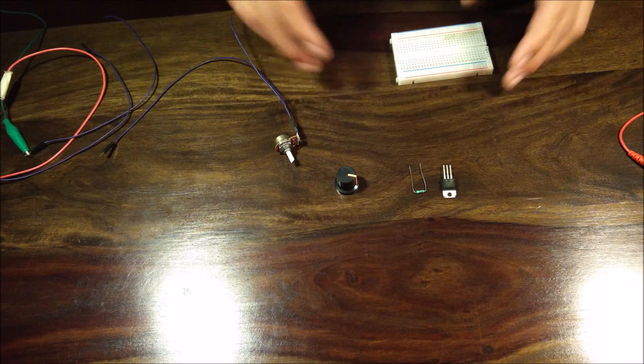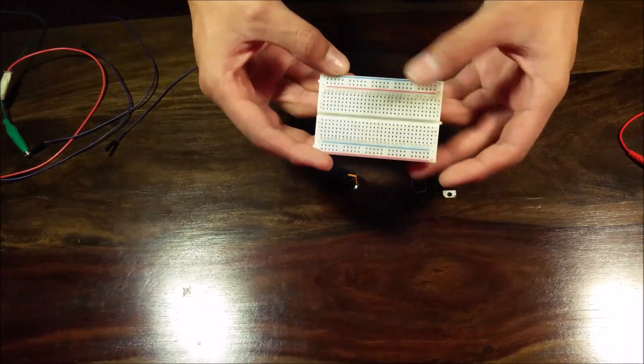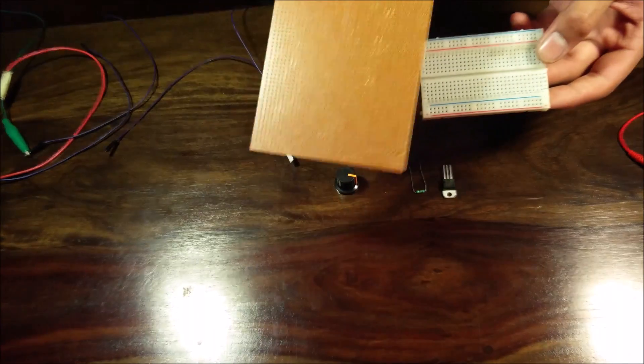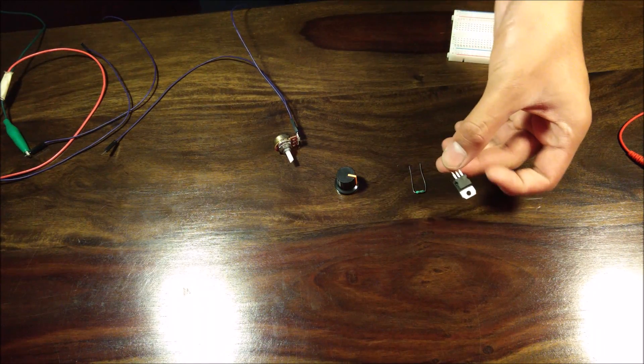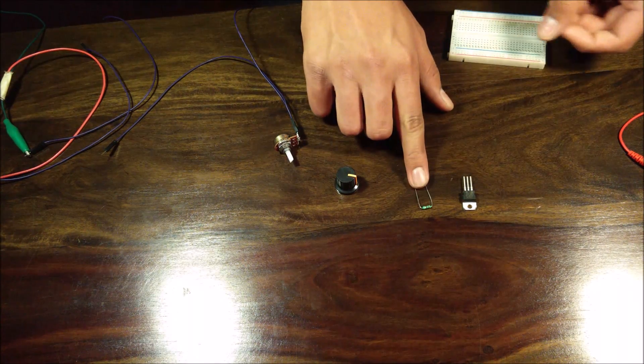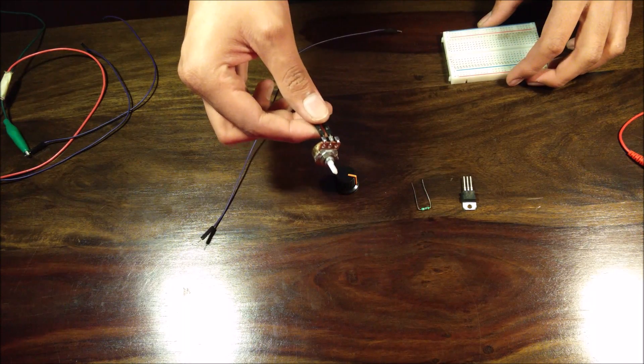Now we're not going to need too much for this build. We're just going to be using a breadboard to prototype out the circuit, a PCB to finalize it once we know it's working, an LM317 voltage regulator, a 180 ohm resistor, a 10 kilo ohm potentiometer,